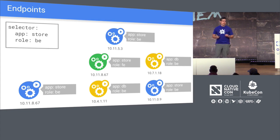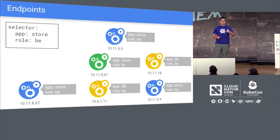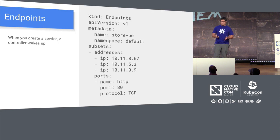A slight digression: endpoints. An endpoint object is automatically created for you when you create a service. In Kubernetes, many controllers want to know the IP addresses of all the pods associated with a service. Because we can have many pods, it can get expensive to keep asking the API server to find that selection. Instead, we group them together in an object called endpoints, so that instead of constantly re-deriving this information, it's cached inside this object. You don't generate this generally — Kubernetes does it for you.